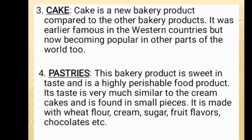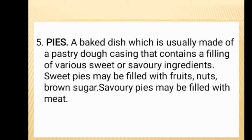Pastries are made with wheat flour or all-purpose flour, cream, sugar, fruit flavors, chocolates, etc. Number 5, Pies. A baked dish which is usually made of a pastry dough casing that contains a filling of various sweet or savory ingredients. Sweet pies may be filled with fruits, nuts, or brown sugar, and savory pies may be filled with meat.